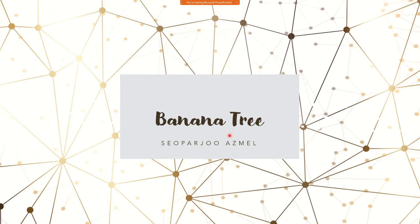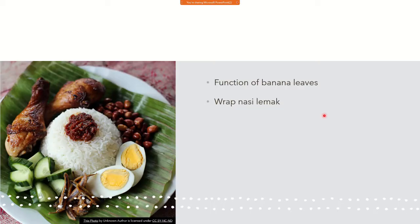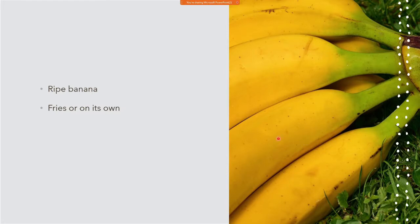I'll begin my lecture today regarding the banana tree. This is a banana tree — as you can see from this field of banana trees, banana trees have broad leaves. You can find banana trees in tropical countries. In Malaysia, there are a lot of uses for banana leaves — you can wrap nasi lemak using banana leaves.